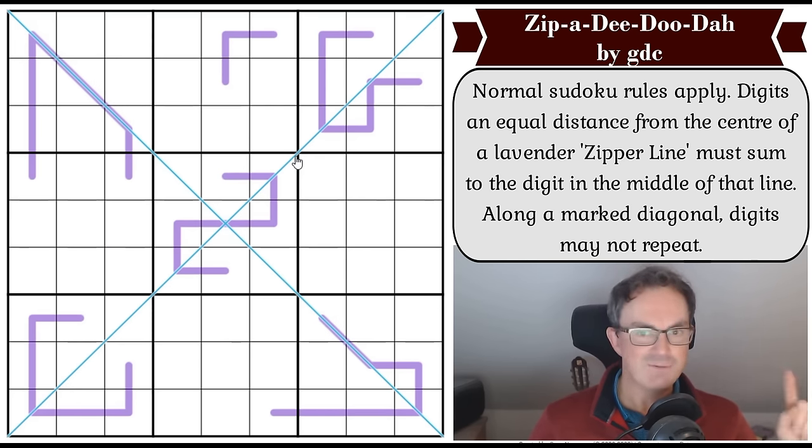I think it's the hardest thing to construct because making a one star puzzle without it being trivial is obviously difficult. And this features also my favorite new constraint, the zipper line. So these are lines where the middle cell is the sum of the digits that are an equal distance away from this cell along the line.